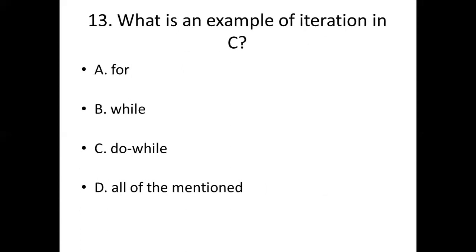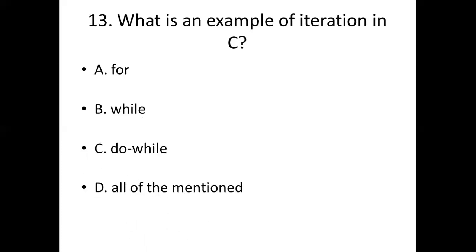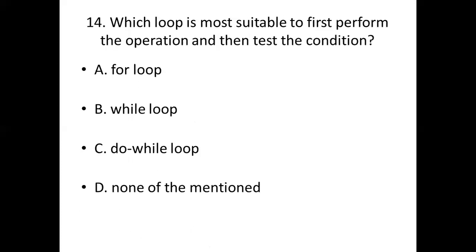Thirteenth bit: What is an example of iteration in C? Option A: for. Option B: while. Option C: do while. Option D: all of the mentioned. Answer: Option D, all of the mentioned.